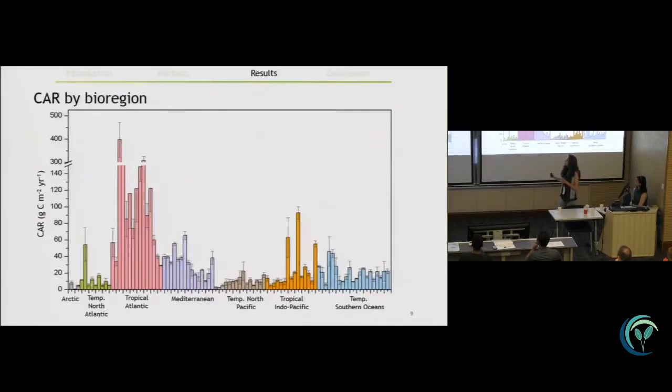So these are the preliminary results of this study. Here I'm showing the carbon accumulation rates in seagrass sediments and in the different bioregions. These estimates are the mean in each bioregion. Here I would like to put some emphasis in this region here. This is the tropical Atlantic.